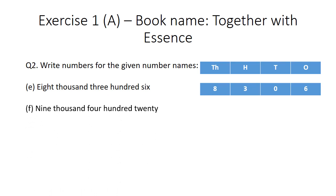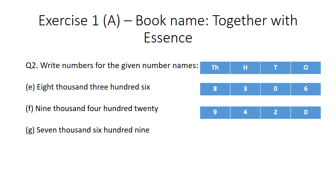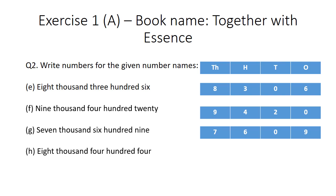Part F: 9,420. We will write 9 at the thousands place, 4 at the hundreds place. For 20, we write 2 at the tens place and 0 at the ones place. Part G: 7,609. We will write 7 at the thousands place, 6 at the hundreds place. At the tens place, no digit is given.